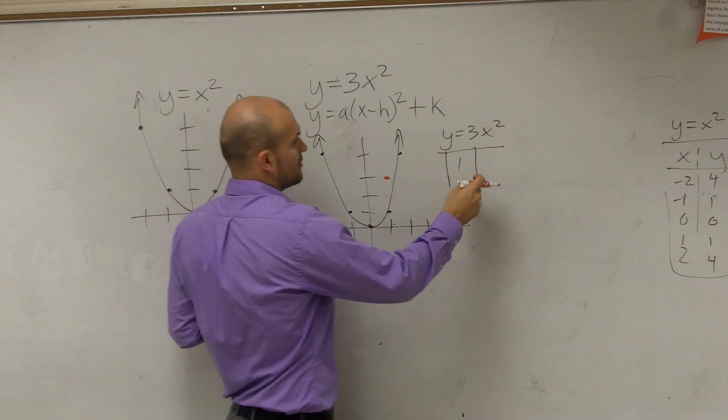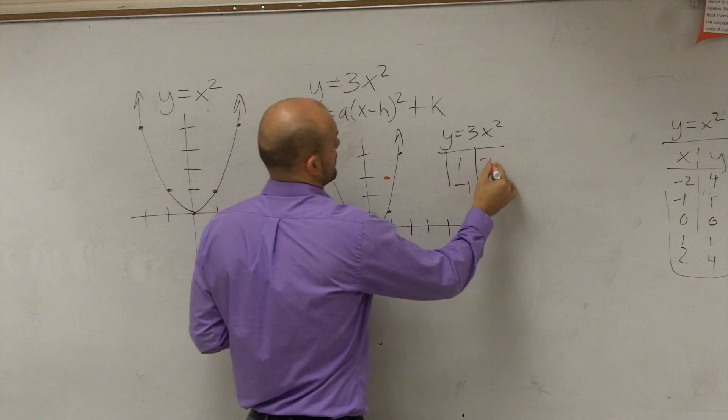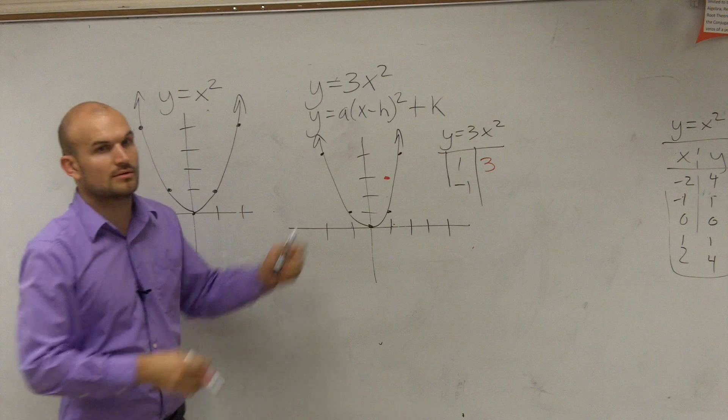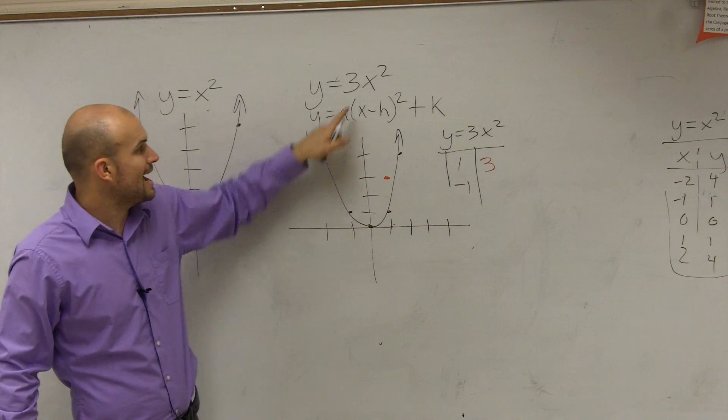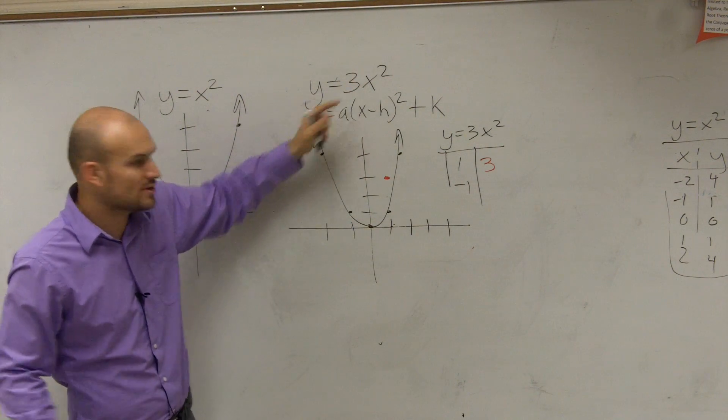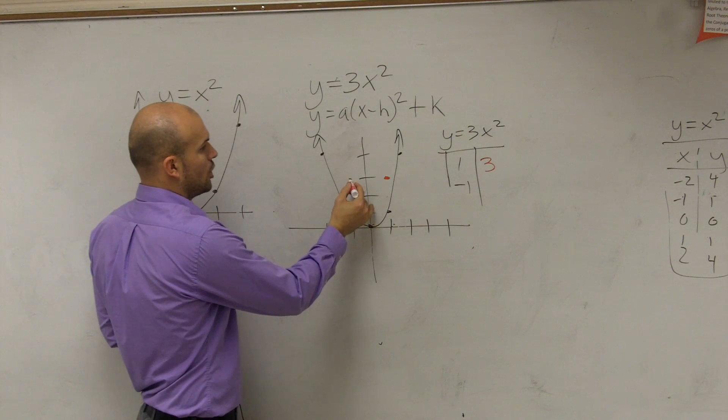Then let's do negative 1. What's negative 1 squared? 1, that's where the parent graph is. But now it's 1 times 3, which is going to go all the way up here.